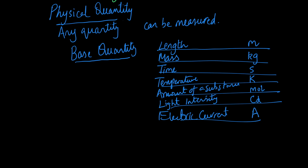One thing you must note is that a couple of these quantities have units written with a capital letter. Temperature (kelvin), light intensity (candela), and electric current (ampere) — for these three, at least the first letter of the unit must be in capitals. For the rest, they're in normal small font, so make sure you don't write them in lowercase.